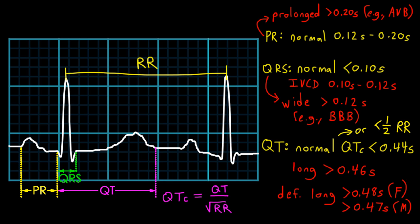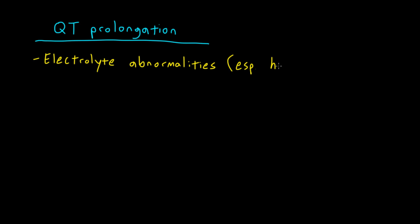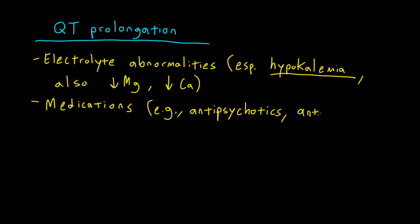As we mentioned before, things that affect ventricular repolarization tend to have the greatest effect on the QT interval. Important causes of QT prolongation include electrolyte abnormalities, especially hypokalemia, though you can also see it with low magnesium and low calcium. Also, a number of medications can cause QT prolongation, including antipsychotics, antiarrhythmics, and some antibiotics, for example macrolides and fluoroquinolones.